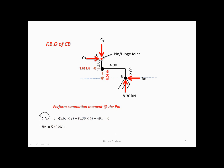We're going to take moments at this location. The 5.63 kN force takes us in the clockwise direction — so it'll be minus 5.63 times a distance of 2 to the point of application. The vertical force, if you extend the line of action, it'll go through the point of application, so that will not create a moment. The next one is the vertical component at point B — 8.3 kN. The perpendicular distance is 4 and it will be rotating in a positive direction — so that term is 8.3 times 4.